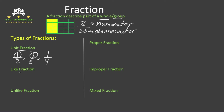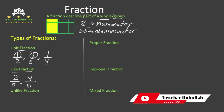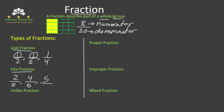The second type is like fraction. Like fractions are fractions that have the same denominators. For example, the fractions 2 fifths, 4 fifths, or even 5 fifths are called like fractions because the denominator of all these fractions is 5.